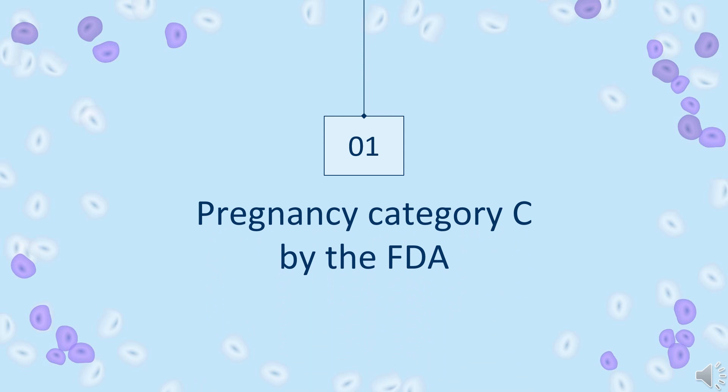Safety advice: Nistatin topical cream, ointment, and powder have been assigned to pregnancy Category C, and Nistatin vaginal tablets have been assigned to pregnancy Category A by the FDA. Animal studies have not been reported. There are no controlled data in human pregnancy.